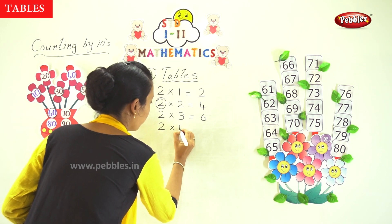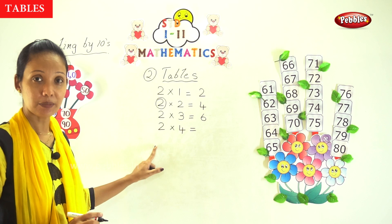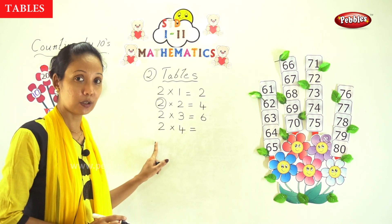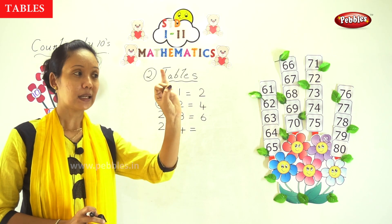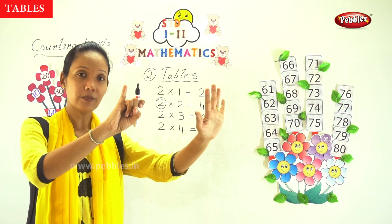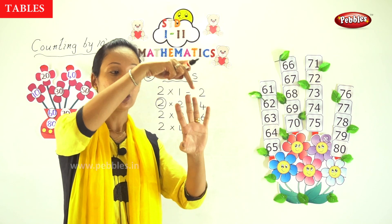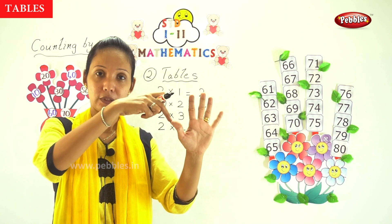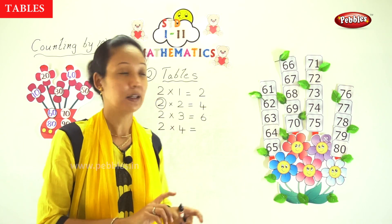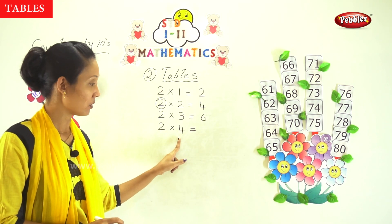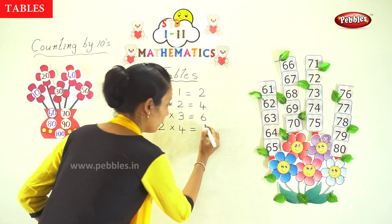Now 2 into 4. The same thing — 2 is taken 4 times. You have a third set and then another one also, 2 more sets. Altogether: 1, 2, 3, 4, 5, 6, 7, and 8. So if you multiply 2 into 4 times you will get 8.